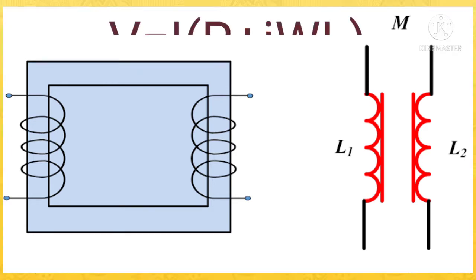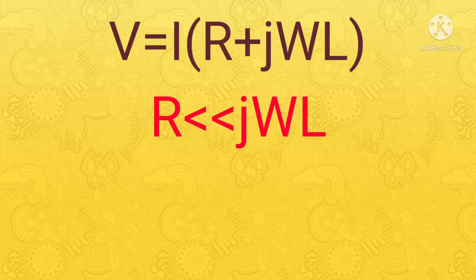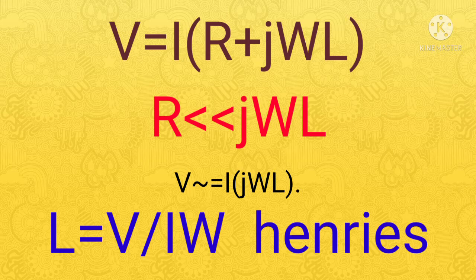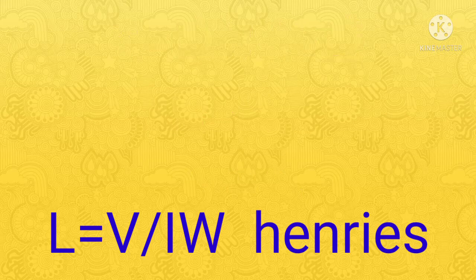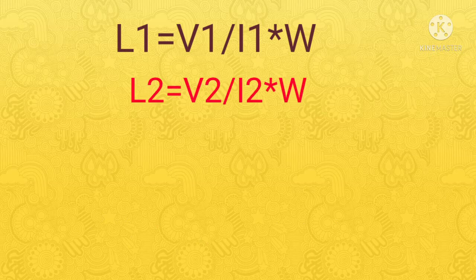We need to know the following mathematical expressions in order to find all these things. We know that the voltage across the impedance is given by I times impedance. But practically, as the resistance is very much less than the inductive reactance, we can write V as almost equal to I times jωL. So from the magnitude, you can write the inductance as the ratio of V over I times ω. For the inductance on the primary side, we need to take the voltages and currents related to the primary. For the inductance of the secondary side, we need to consider the voltages and currents related to the secondary.